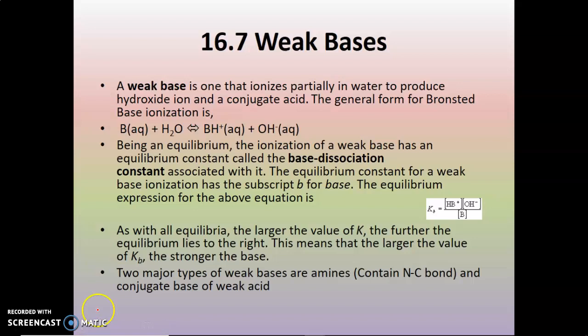Weak bases, just like weak acids, only partially ionize in water. Your general equation has your base plus water, because water is the thing that donates the hydrogen ion, giving you a conjugate acid — your base with an extra hydrogen on it, because it accepted the hydrogen ion — and then you have your hydroxide ion, which increases the hydroxide ion concentration and satisfies Arrhenius' definition of a base.